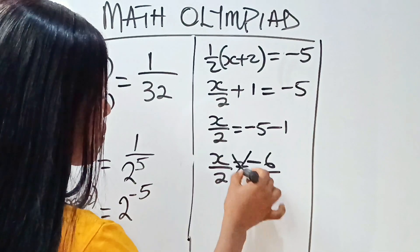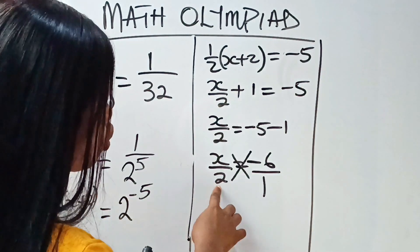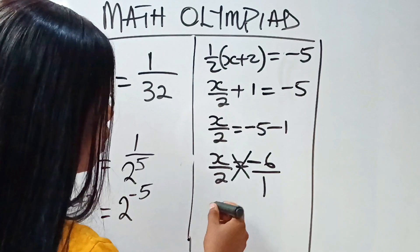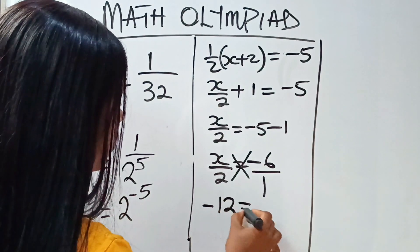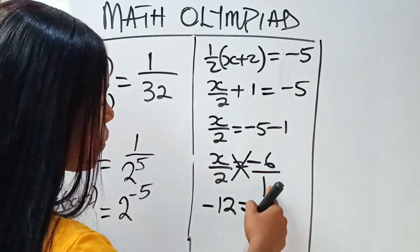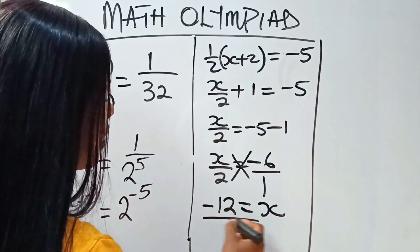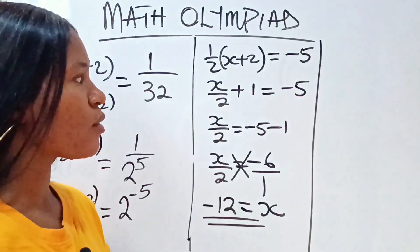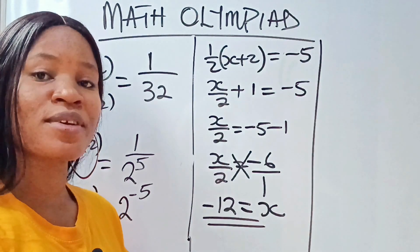So when we cross multiply, we'll have that 2 times minus 6 gives us minus 12 is equal to x times 1, which gives us x. And this is the final solution. Thank you so much for watching.